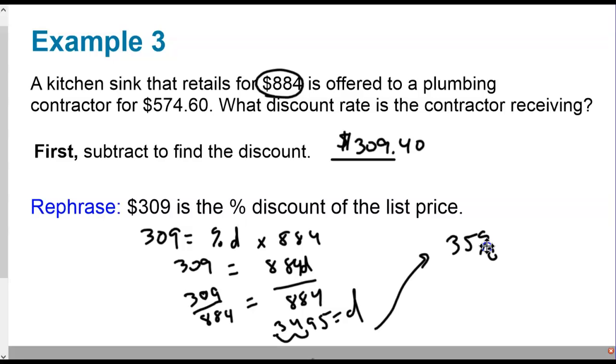Let's see, $884 divided in half would be $442. And so $574 is a little bit more than that. So it's not all the way down at 50%. So yeah, that would be about right. So it sounds good.